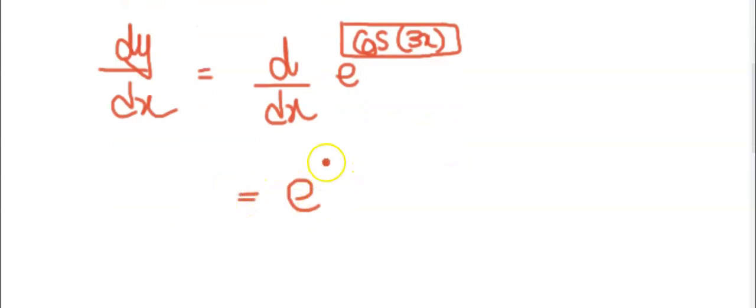We write it down e to the cos 3x as it is, because we don't change it. And then we differentiate the box.